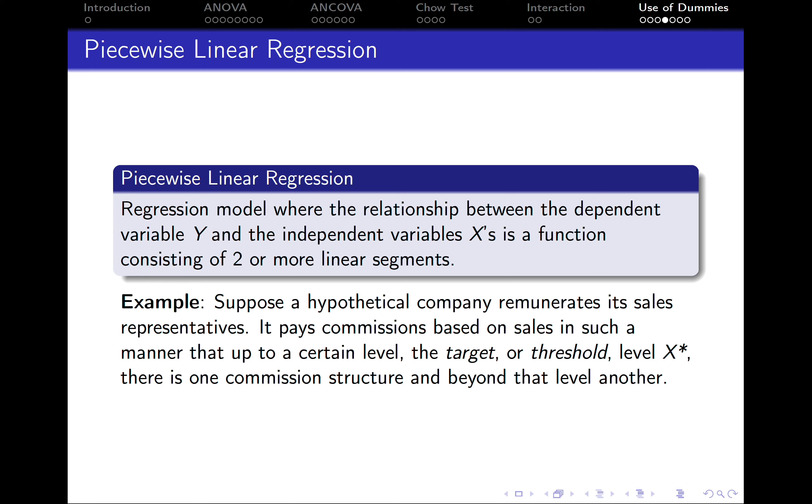To understand this type of regression, let's look at a hypothetical example. Suppose a company remunerates its sales representatives and pays commission based on sales in such a manner that up to a certain level, the target or threshold level X*, there is one commission structure and beyond that level another.